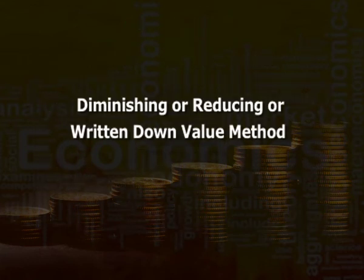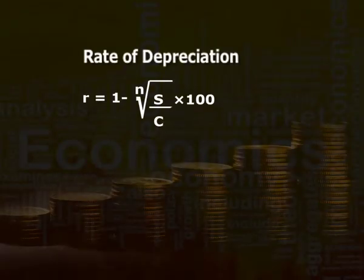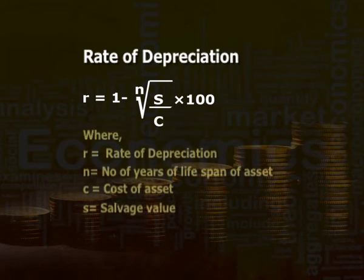Second is the diminishing balance, or reducing balance, or written down value (WDV) method. Under this method, depreciation is charged at a fixed percentage on the book value of the asset every year. It is charged on the reducing balance, that is, on the cost of the asset less accumulated depreciation every year. However, while the rate of depreciation remains fixed, the amount of depreciation declines as the book value of the asset reduces every year. The rate of depreciation under this method can be calculated as: R = 1 − (S/C)^(1/N), where R is the rate of depreciation, N is the number of years of lifespan, C is the cost of the asset, and S is the salvage value.